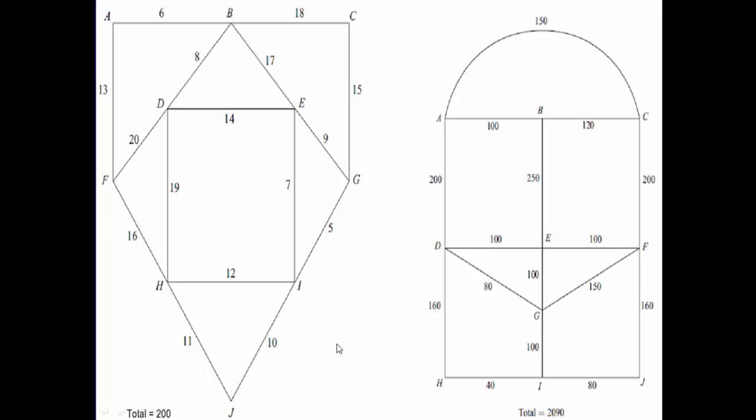The next problem we're going to look at in Decision One is where you have to visit every arc in a graph. For example, we need to go along every one of these arcs. You may remember earlier on when we first looked at graphs, we looked at Eulerian graphs and semi-Eulerian graphs, and we tried to draw round graphs without moving our pencil or pen from the paper. And this is the type of problem we're looking at.